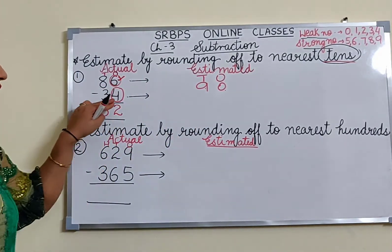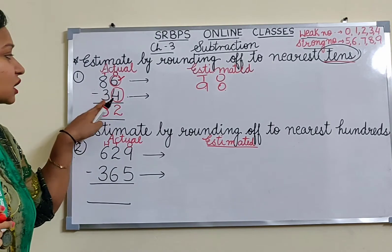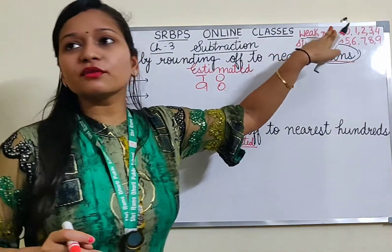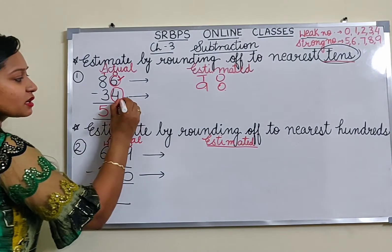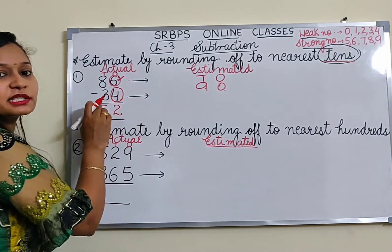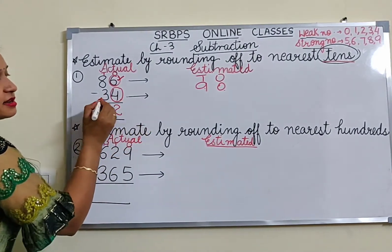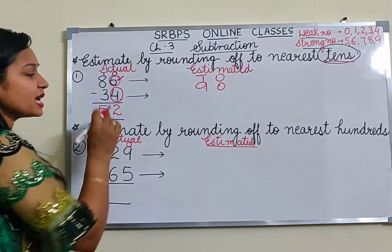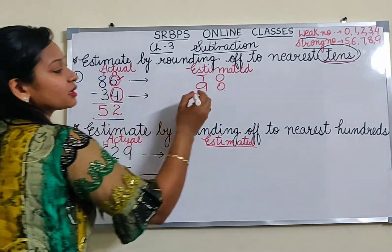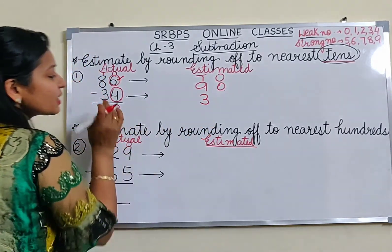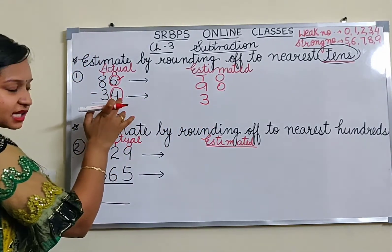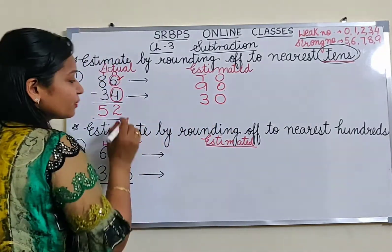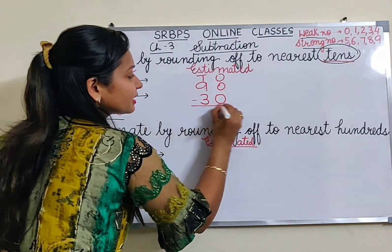Coming to the number 34, the number inside the circle is 4, and 4 lies in the weak number list. Since 4 is a weak number, it will not add anything to the number before it. So 3 remains the same and the number inside the circle becomes 0. So 34 rounds off to 30.